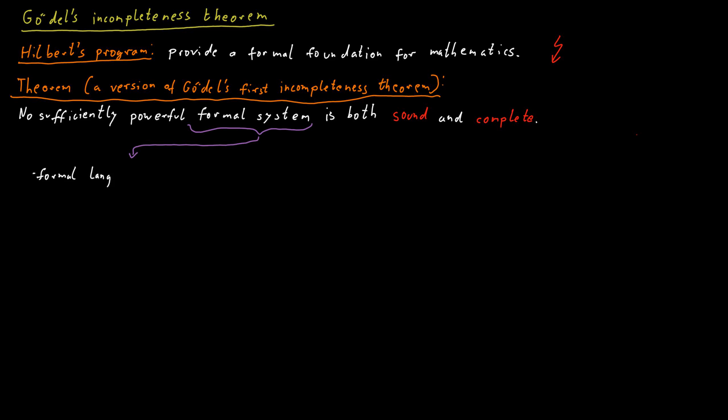A formal system is a formal language in which we can make statements and a set of rules, rules of inference, which allow us to derive new statements from given ones. The system also has a finite set of axioms.